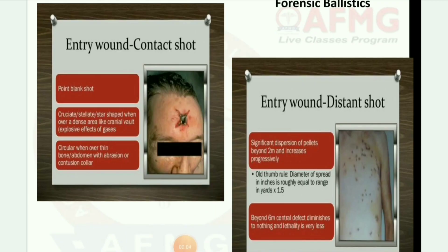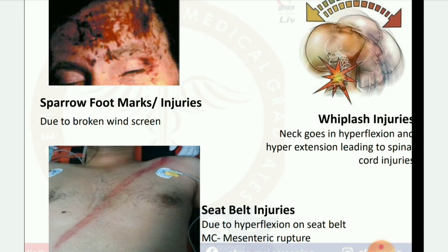Next image: forensic ballistics. Entry wound — contact shot and point blank shot: cruciate/stellate star-shaped when over a dense area like the cranial vault, with explosive effects of gases; circular when over thin bone or abdomen, with abrasion or contusion collar. Entry wound — distant shot: significant dispersion of pellets beyond 2 meters, increases progressively. Old thumb rule: diameter of spread in inches roughly equals range in yards multiplied by 1.5. Beyond 6 meters, the central defect diminishes to nothing and lethality is very low.